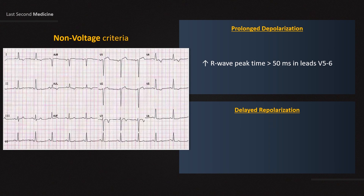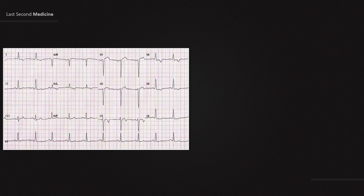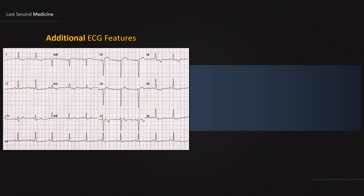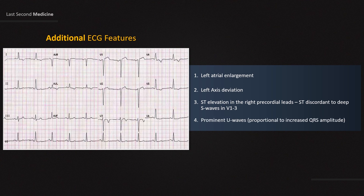The second non-voltage criterion for LVH is ST segment depression and T-wave inversion in the left-sided leads. This is also known as left ventricular strain pattern. There are some additional ECG changes in LVH as well: you may find left atrial enlargement, left-axis deviation, ST elevation in the right precordial leads — that is, the ST segment is discordant to the deep S-waves from V1 to V3 — and prominent U waves proportional to the increased QRS amplitude.